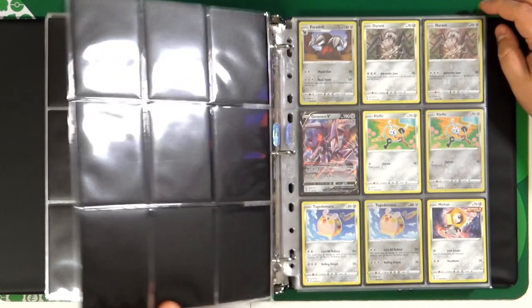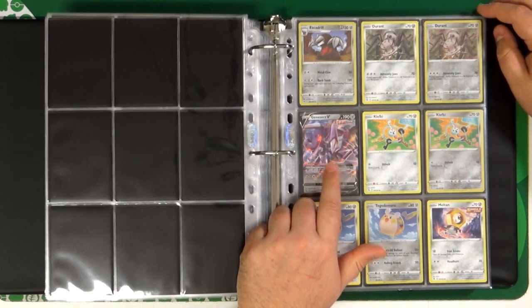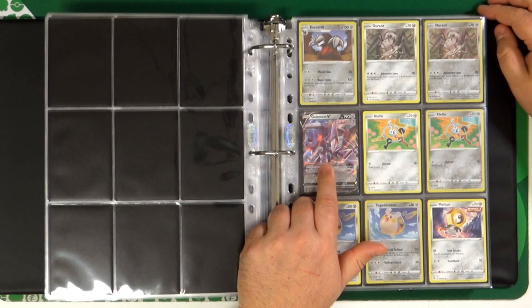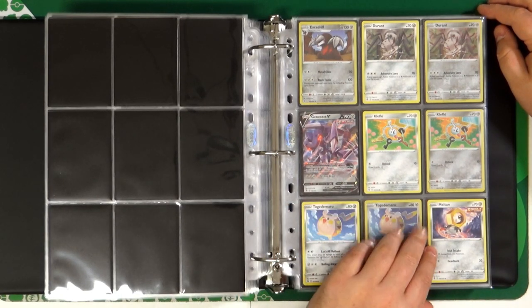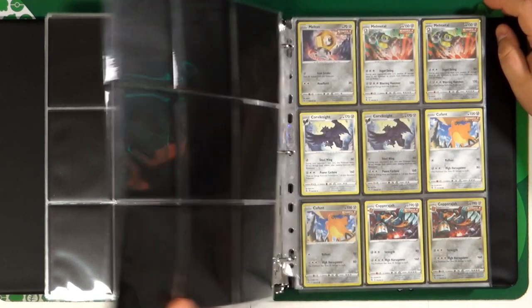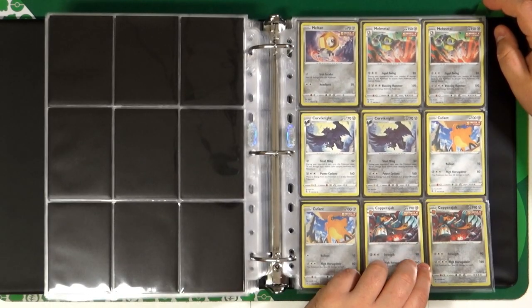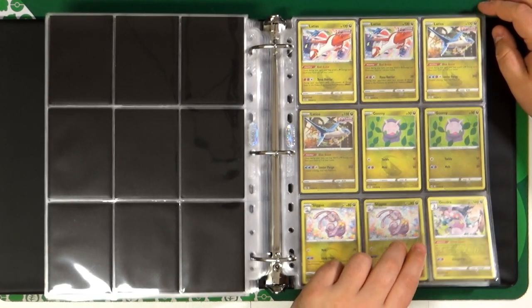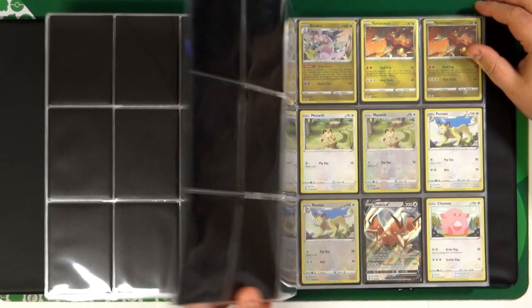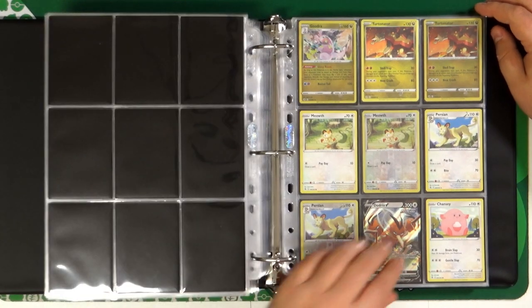Skarmory, Excadrill, Genesect, also another very useful card for the Fusion Strike deck. Corviknight, Cufant, Copperajah. Latias and Latios, and the Goomy Evolution line.